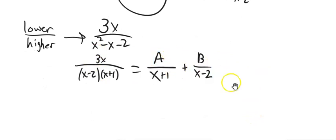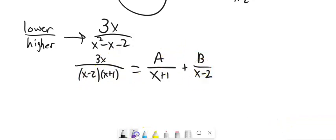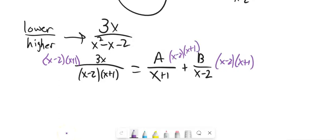Now we want to solve this for a and b. I have this fraction equal to this fraction, so I'm going to multiply both sides by the denominator — x minus 2 times x plus 1. It gets distributed over here. When I multiply both sides by it, it gets distributed across that addition. The x minus 2's divide out, the x plus 1's divide out. So I'm left with 3x on the left, and a times x minus 2 plus b times x plus 1 on the right.